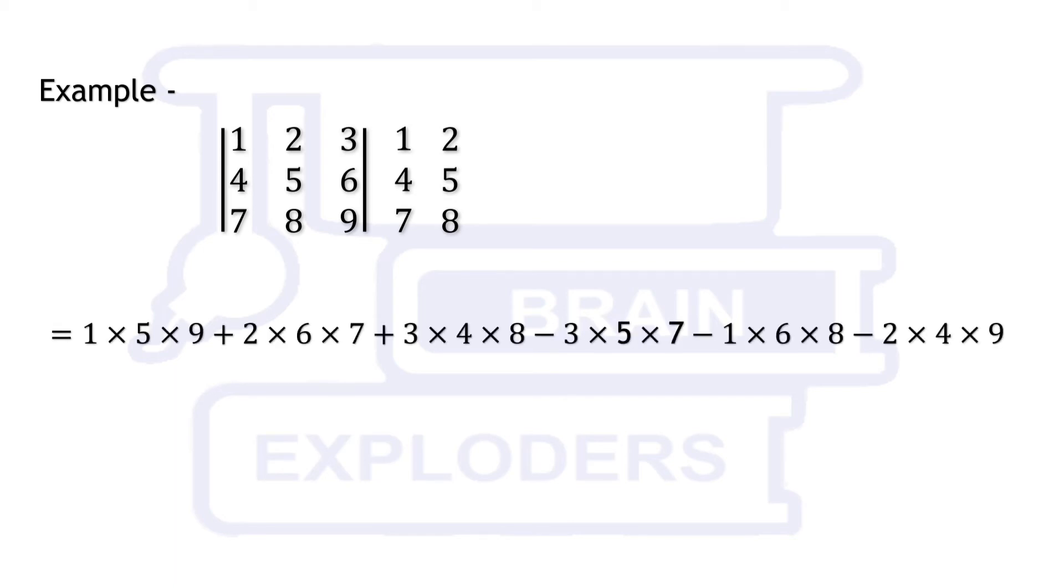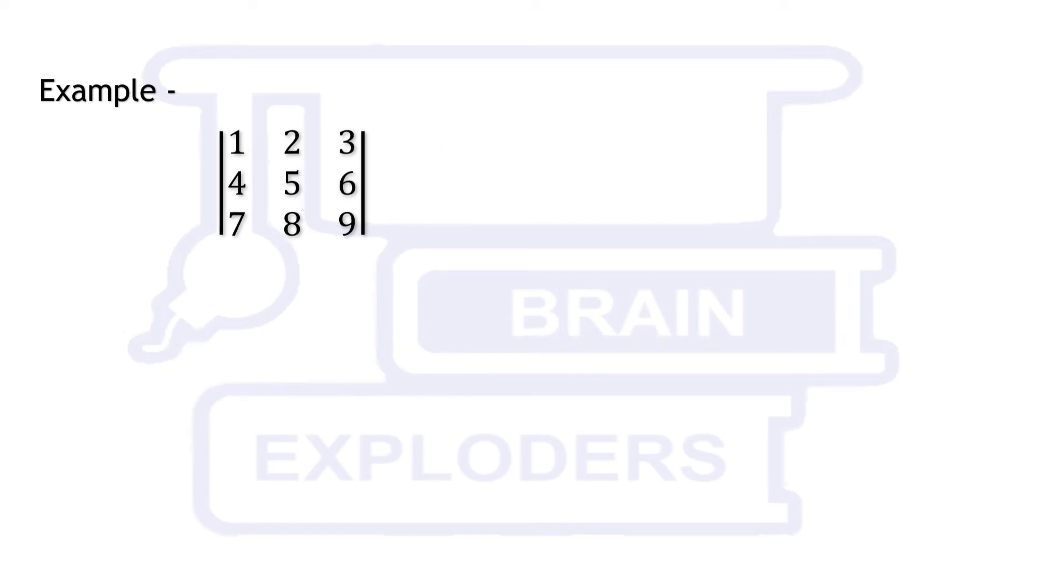Now apply the rule of Sarrus. As on calculation its value comes out to be 0, we can cross check this value with the help of elementary row operations.